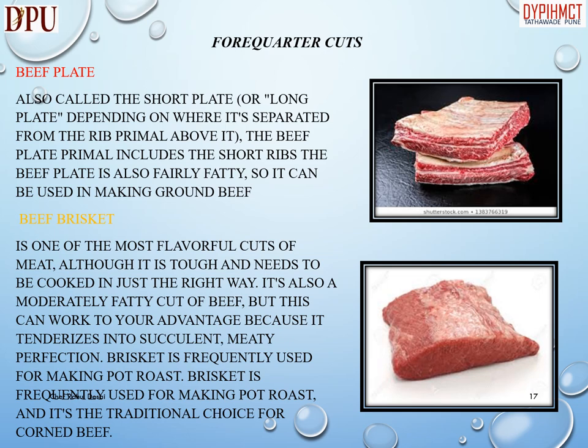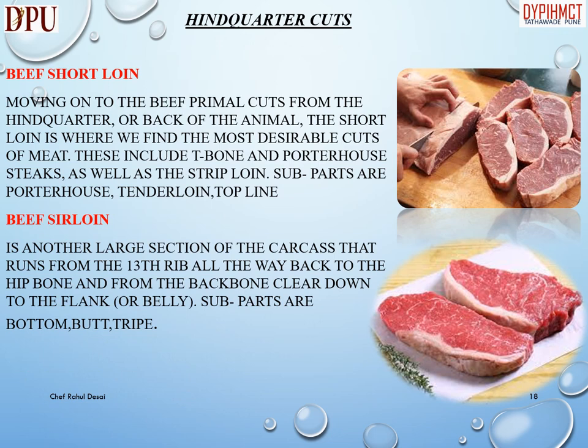Brisket is also a moderately fatty cut of beef, but this can work to your advantage because it tenderizes into succulent, meaty perfection. Brisket is frequently used for making pot roast, and it is the traditional choice for corned beef.